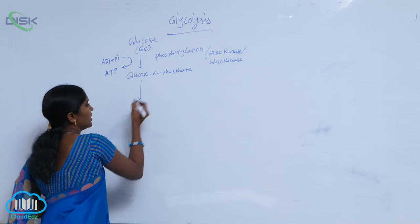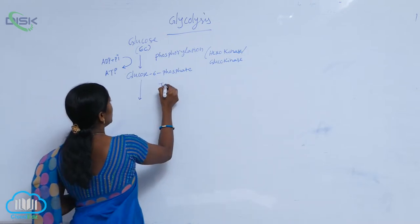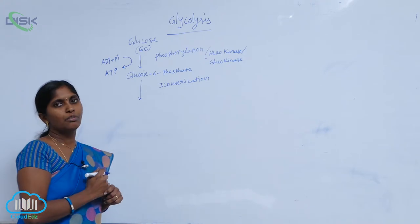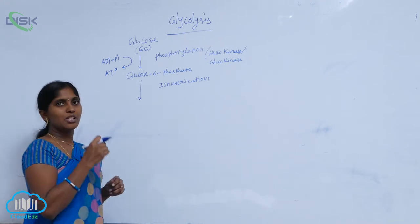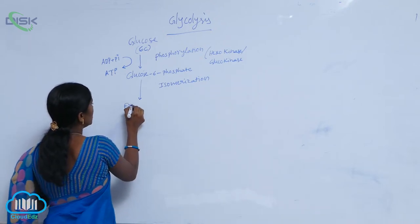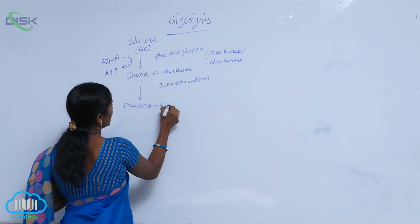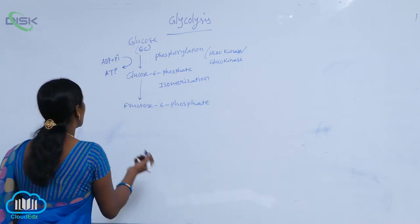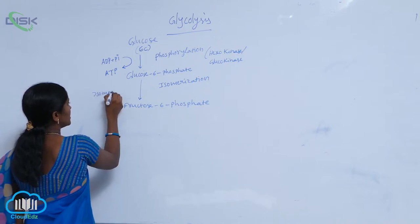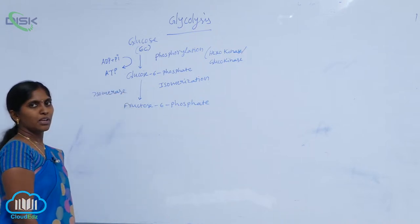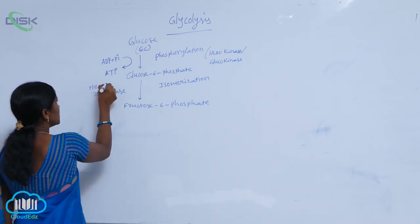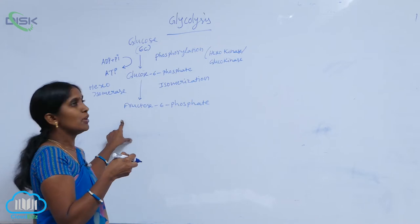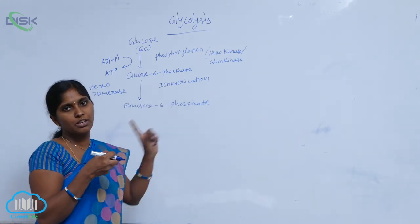The next reaction is isomerization. Isomerization means the making of an isomer — glucose is isomerized to fructose. Fructose-6-phosphate is produced during the isomerization reaction. The enzyme here is an isomerase enzyme — specifically hexoisomerase — which mediates the conversion of glucose-6-phosphate to fructose-6-phosphate.